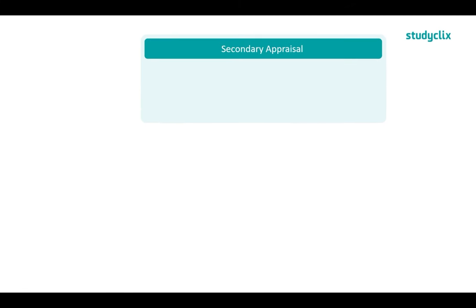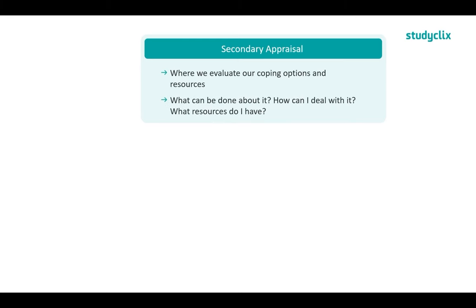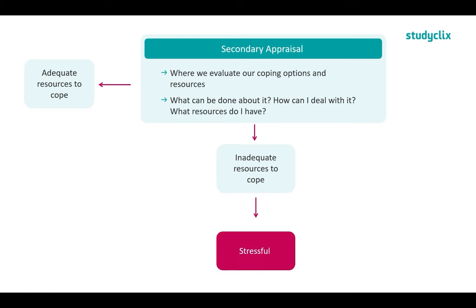Next we move on to secondary appraisal. If we've deemed the situation as stressful in the primary appraisal, we now need to evaluate our coping options and resources. We ask ourselves: what can be done about it? How can I deal with it? What resources do I have? We can deem resources adequate — meaning we have enough to cope and won't stress about it. Resources could include family and friends, a support network, a counsellor, or strategies like exercise. However, if we have inadequate resources to cope, we will experience stress.